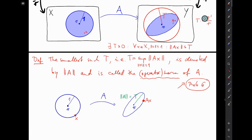So just in short, what are we saying here? If the norm of x equals 1, then the norm of Ax is less than or equal to T, but instead let's write norm of A.